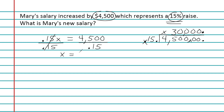Mary's original salary was $30,000. But we have to be careful — we haven't answered the question yet, because we need to know Mary's new salary. Since she got a raise of $4,500, we add 4,500 to 30,000, which gives Mary a total new salary of $34,500.